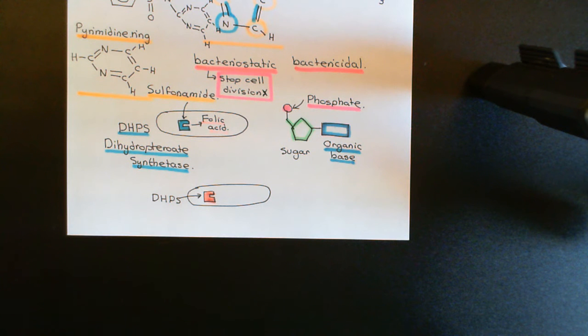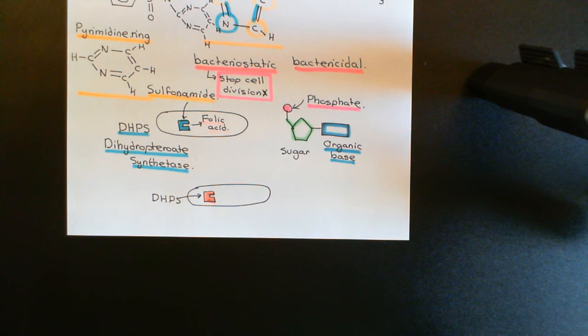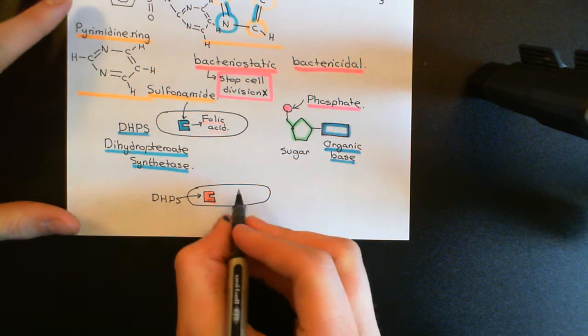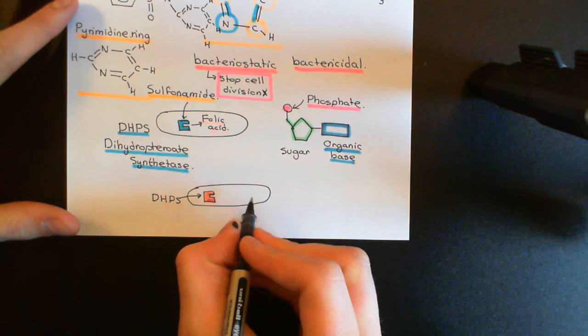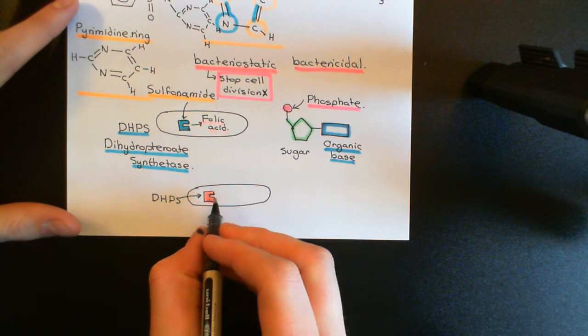How did the bacterial cell acquire the ability to make this new form of dihydropteroate synthase that is resistant to sulfonamides? It's encoded in plasmid DNA.